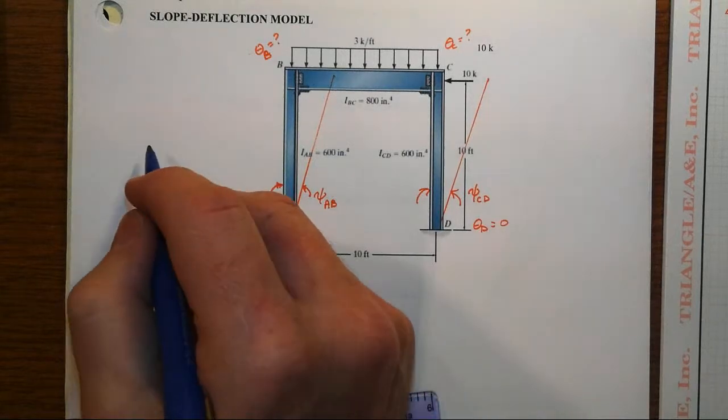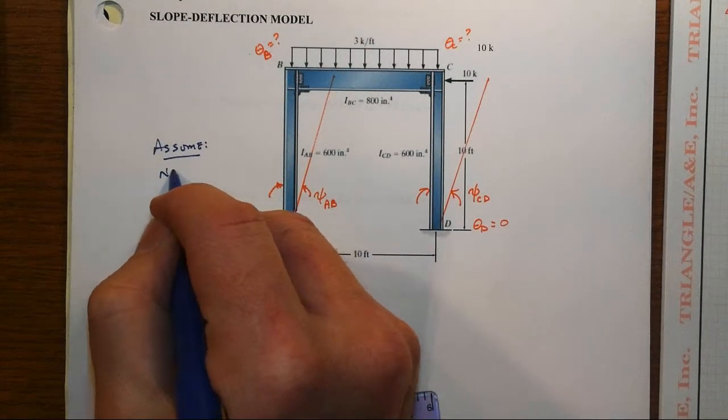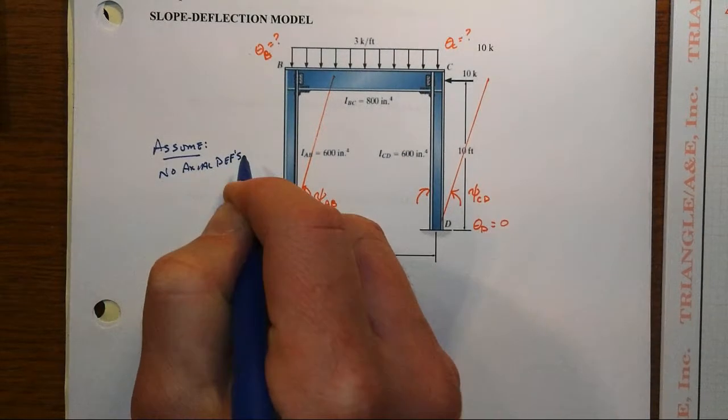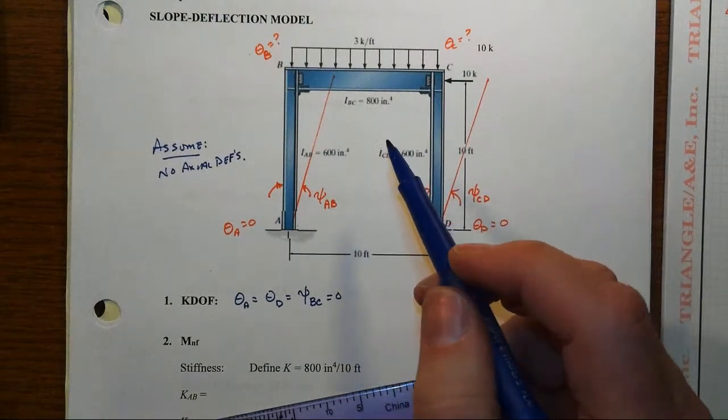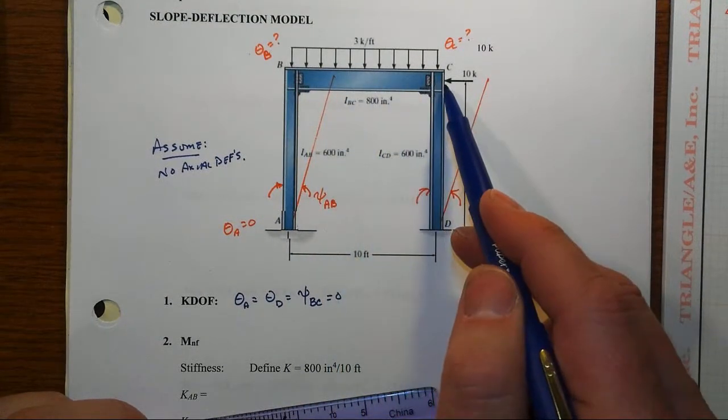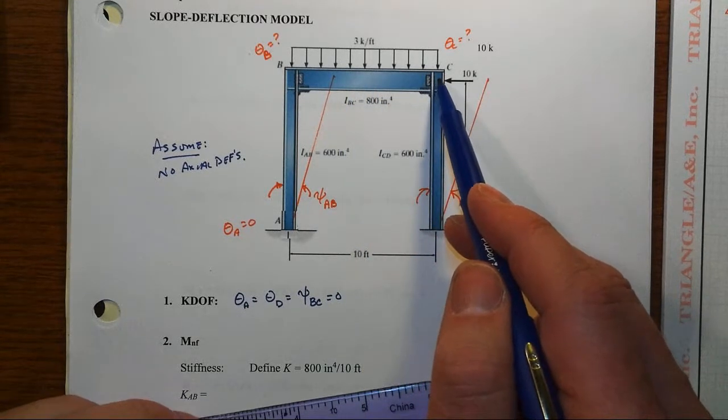That's because our basic assumption here is going to be that we have no axial deformations. And as such then, the tops of the columns won't sink down, although they can move left and right, and so therefore BC doesn't have any chord rotation.